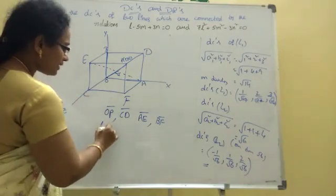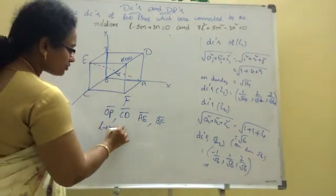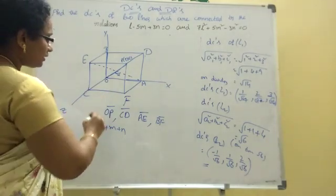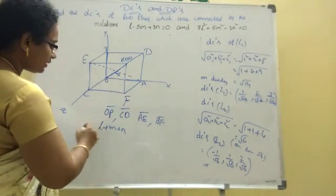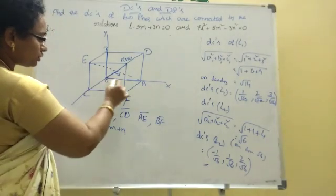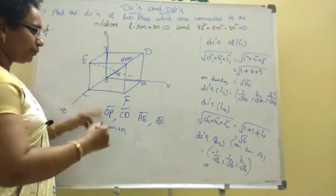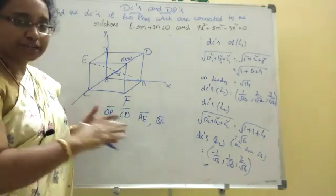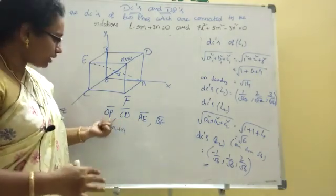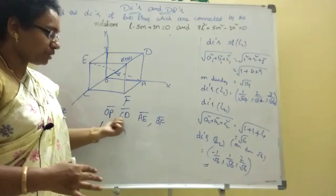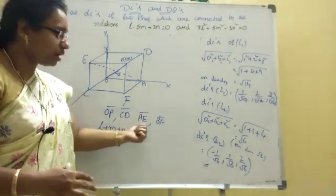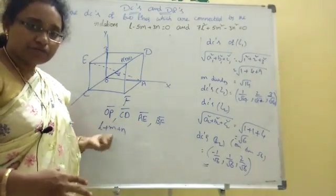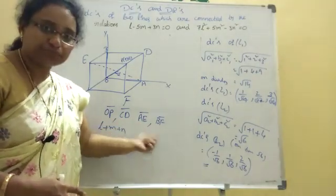That is L plus M plus N. The angles between the four diagonals are alpha, beta, gamma, delta. Find cos alpha, cos beta, cos gamma, cos delta.